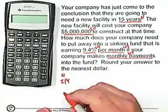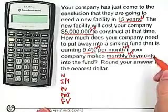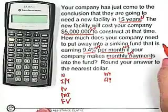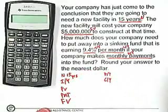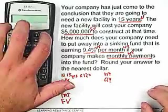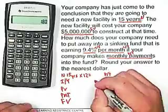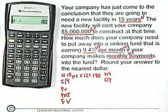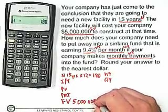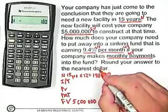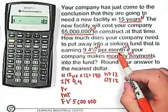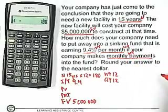Let's set up our row of buttons. N is going to be based on 15 years of payments, and the payments are monthly, so times 12. On the calculator: 15 times 12 equals 180, so push N. We're told we need $5 million, so that's our future value. The interest is 9.4% compounded monthly, so both PY and CY are 12, because it's 9.4% monthly with monthly payments.